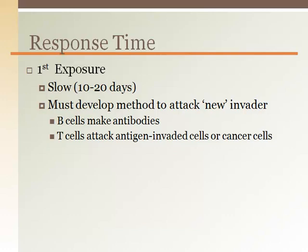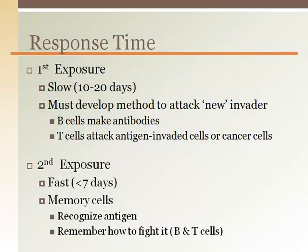The next time that same antigen is encountered, the response is much faster because we generated memory cells after the first exposure, so the cells do not have to learn all over again how to fight that antigen. This is the whole purpose of vaccinations. For diseases that can kill or permanently damage us, we purposely expose ourselves to a harmless form of that antigen so our immune system can develop the memory cells and fighting ability against that antigen. Then, if we are ever exposed, our immune system can remove that threat before it can do us any harm.